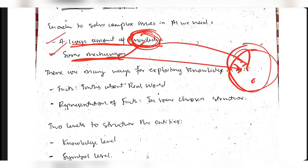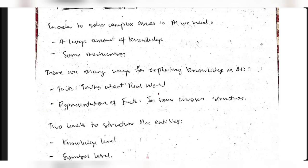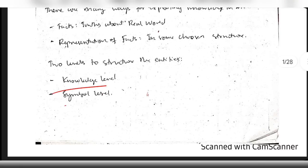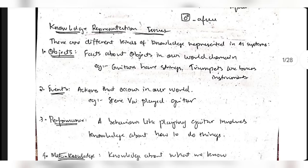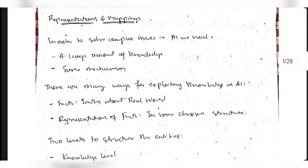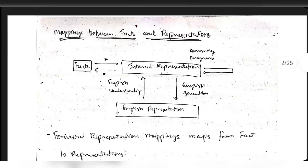We don't always have a large amount of knowledge, so we need to explore things by using facts and the representation of facts. We'll be exploring at two levels: the knowledge level and the symbol level. That was a brief introduction about what knowledge is, how it is represented, and what knowledge is composed of.